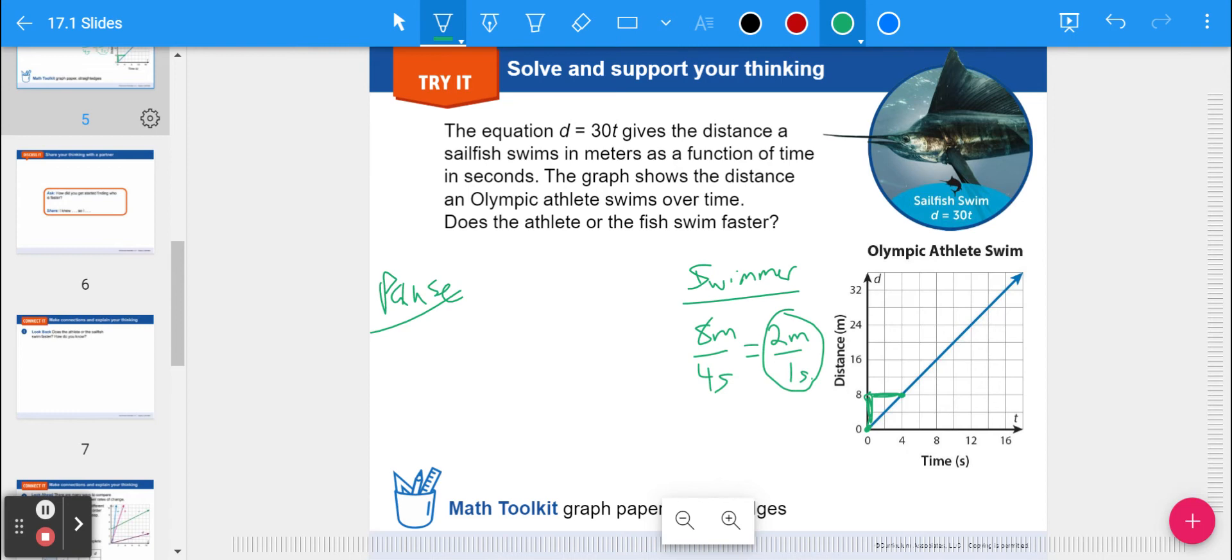Now let's look at the sailfish. The sailfish is represented by the equation d equals 30t, where d is the distance and t is the time. So distance or meters is 30 per second. So that means the rate of change is that 30. That's our rate of change because it's multiplied by the variable. And that means the sailfish will go 30 meters per second, which is a lot faster than what the swimmer does.